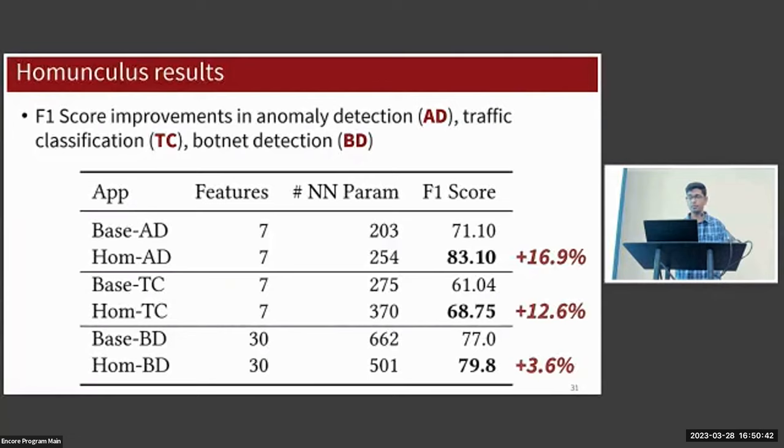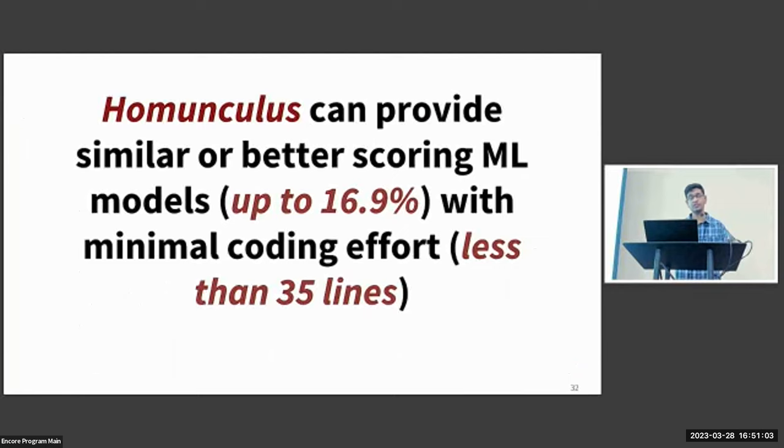In cases like anomaly detection and traffic classification, it's actually creating larger models than the baseline. This is because it's effectively making use of the available hardware in exchange for F1 score - otherwise this hardware would simply be unused. In each of these cases the results were achieved within about 20 iterations of the optimization loop. The takeaway here is that Homunculus can provide similar or better scoring ML models in a number of applications, and all of this is working towards significantly reducing the effort on the part of the network operator.